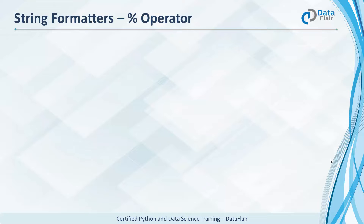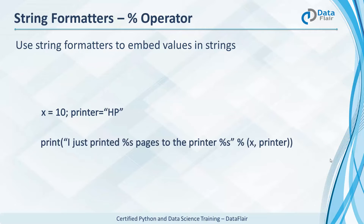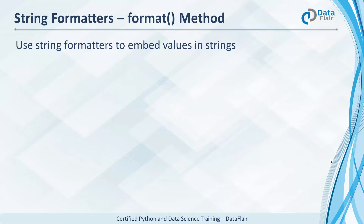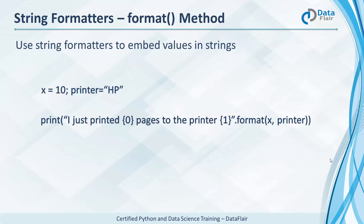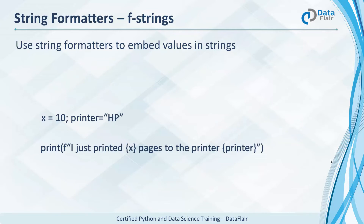Using formatters, we can embed values into strings. First, the percent operator: set x to 10 and printer to 'hp.' The values of x and printer are fed into the print statement at the positions marked with '%f' or similar placeholders, printing 'I just printed 10 pages to the printer hp.' We can also use the format method, where values are fed via curly braces — x goes to position 0 and printer to position 1. You can also initialize values directly in the format method. Yet another way is f-strings, where the value of x goes into curly braces containing 'x,' and similarly for printer.